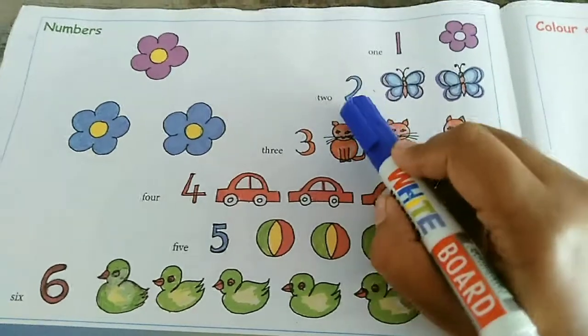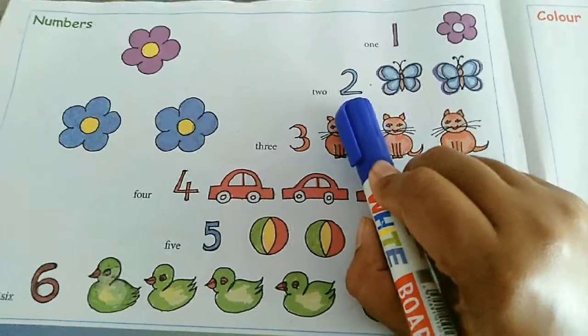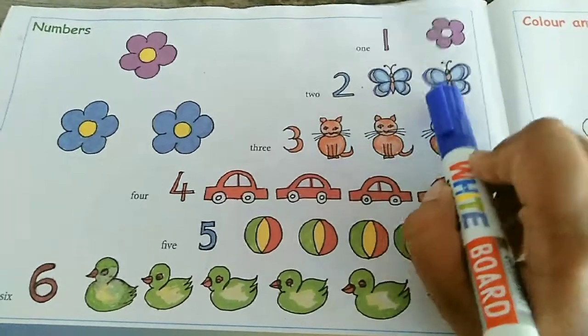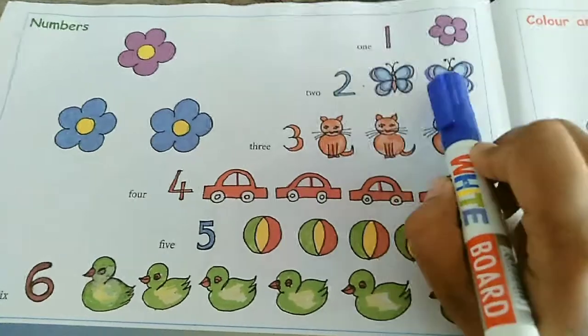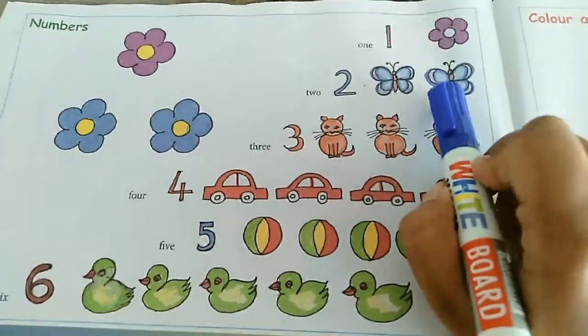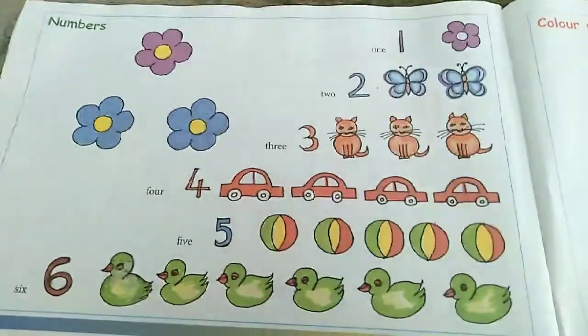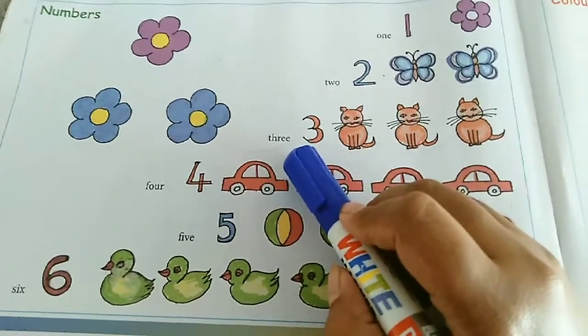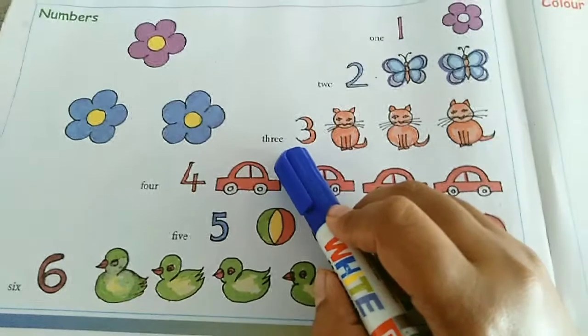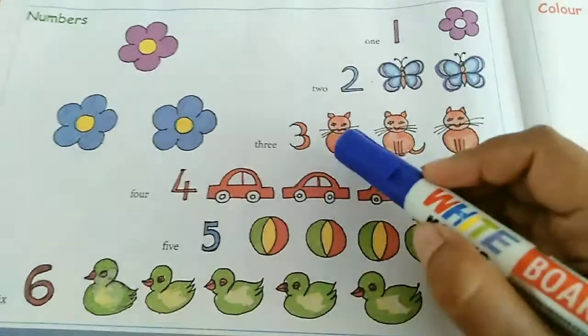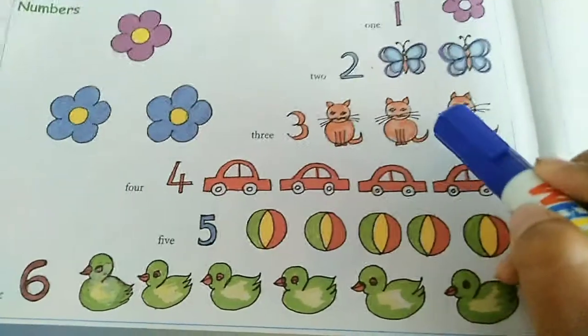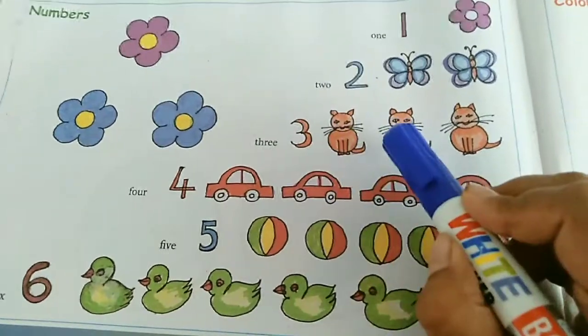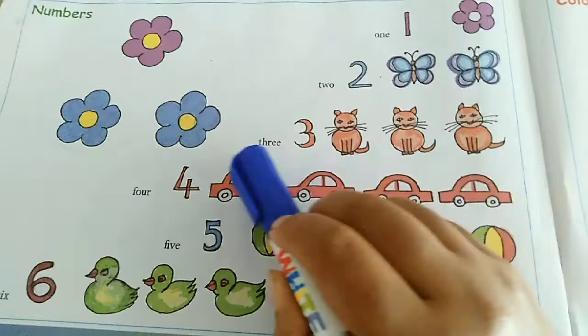What is the second one? Two. What is this number? Two. Two butterflies. One, two. Two butterflies. What is the next number, children? Number 3. You can see three cats here. One, two, three. Three cats.